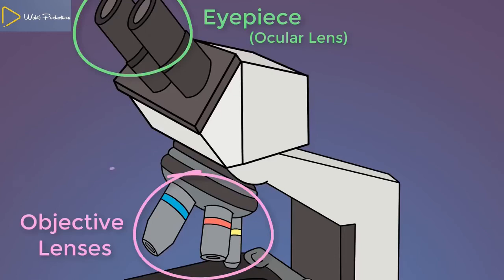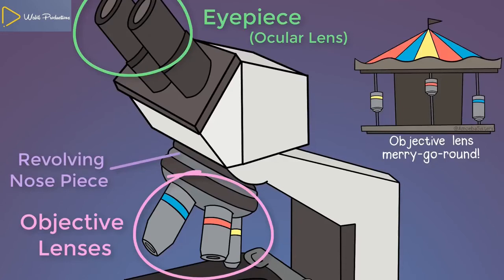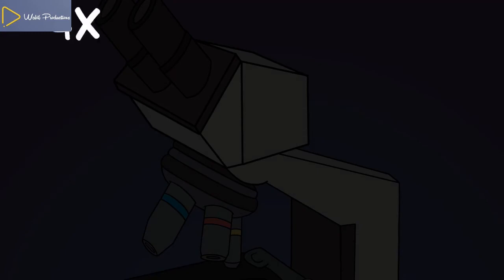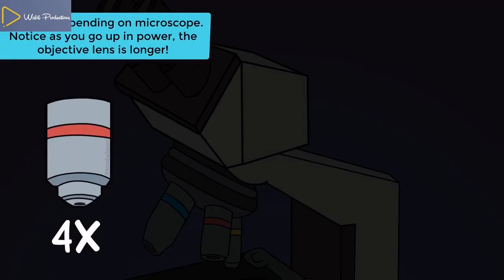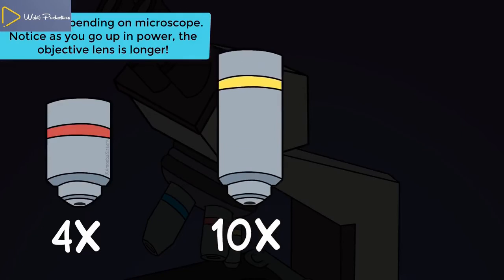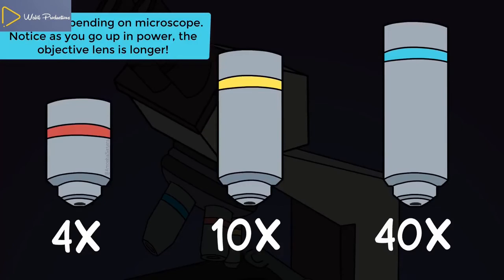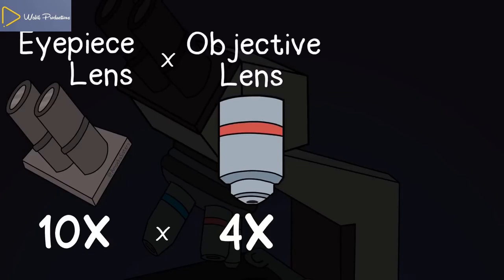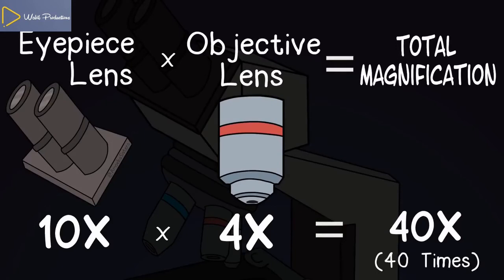The objective lenses are attached to this revolving nosepiece, which allows them to be rotated so you can select the one you want to use. With my particular microscope, I have three objective lenses: a scanning objective lens that magnifies four times, the low power objective lens that magnifies ten times, and the high power objective lens which magnifies forty times. Don't forget the eyepiece lens, because that also magnifies images — my eyepiece lens magnifies ten times. So if I used the scanning objective lens, I would multiply that by the eyepiece lens magnification, giving a total magnification of forty times.